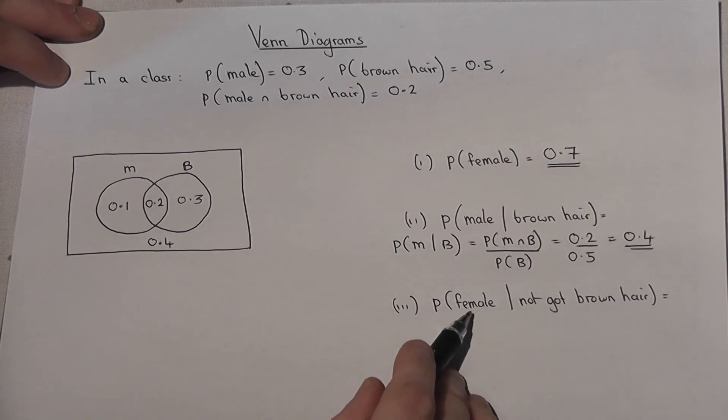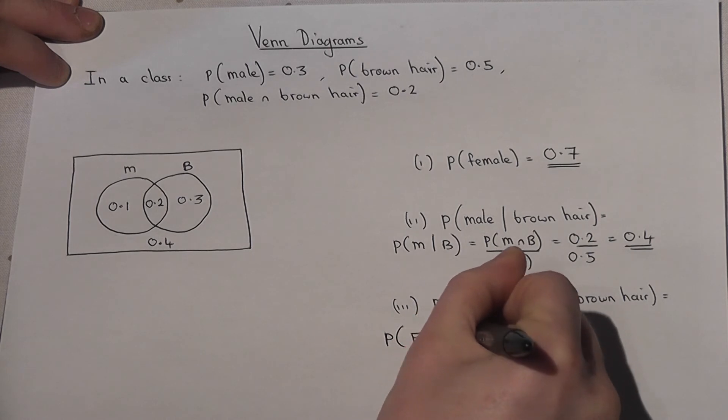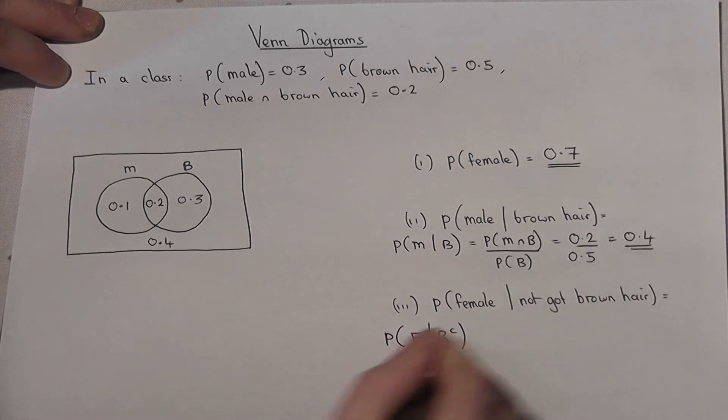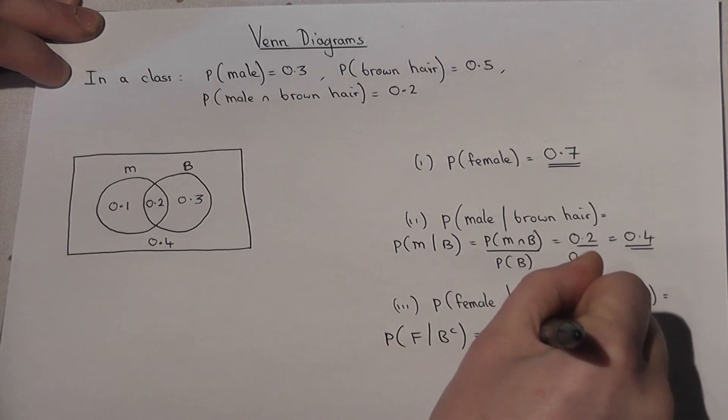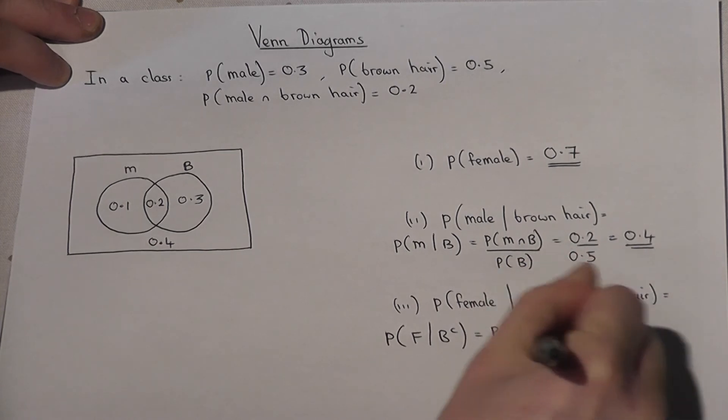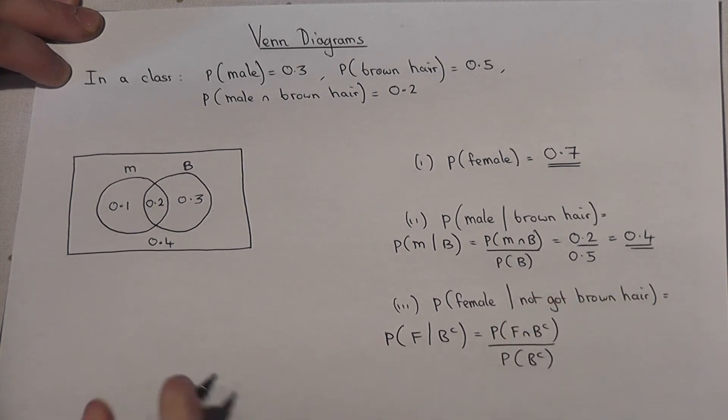The third one is female given not brown hair, so again the chance of being female given not brown hair over the chance of not brown hair.